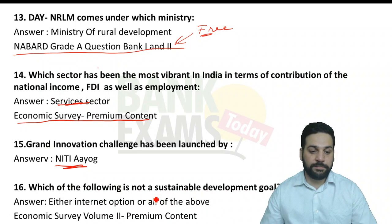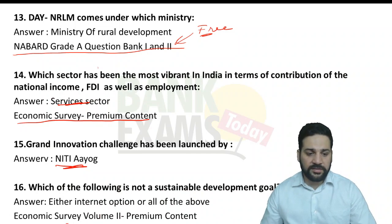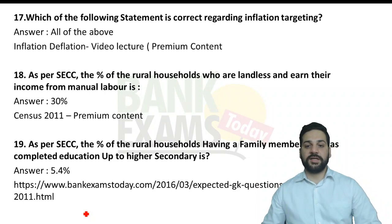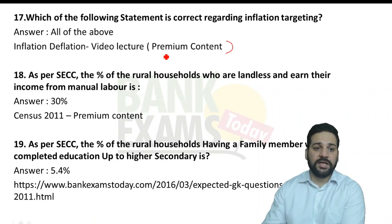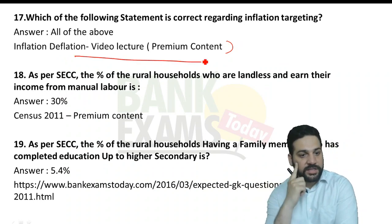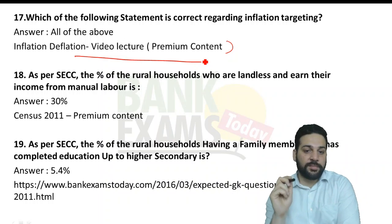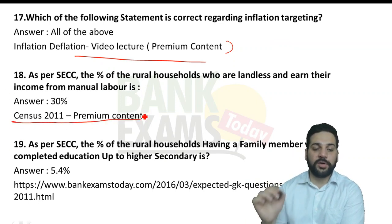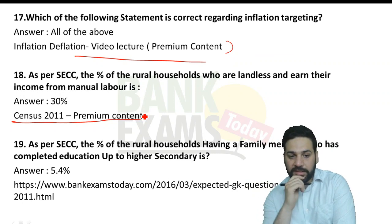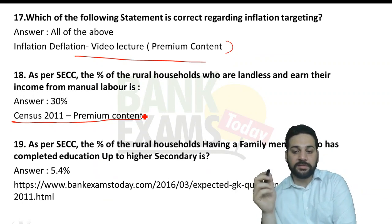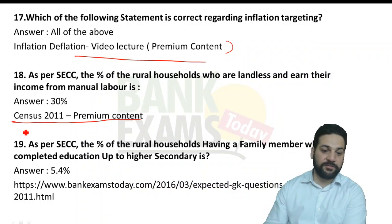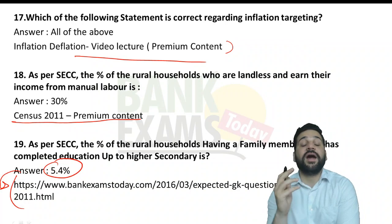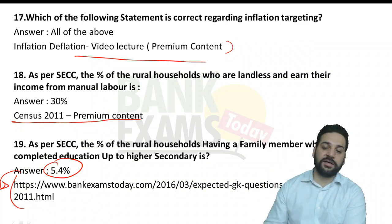Which of the following is not a sustainable development goal — covered in Economic Survey Volume 2, premium content. The statement regarding inflation targeting — covered in our inflation and deflation video lecture in premium content. As per SECC, the percentage of rural households that are landless and earn from manual labor is 30% — from census 2011 premium content. The percentage of rural households with education completed up to highest secondary is 5.4% — from a census article we republished multiple times.